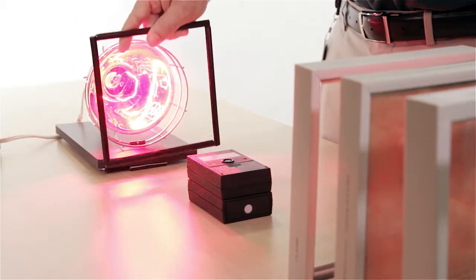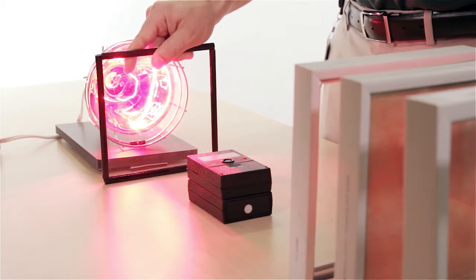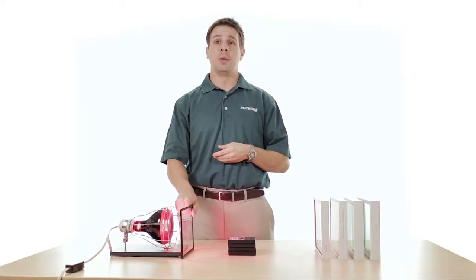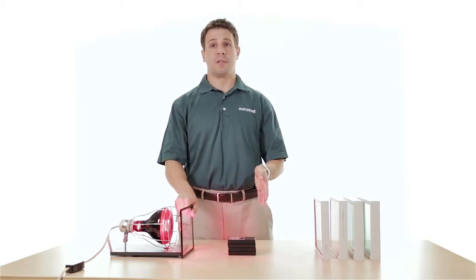In most homes today, we have what's called single pane glass in your windows. If I set this single pane glass in front of the BTU meter, the BTU meter reads 81%. So 81% of the heat from this lamp is actually entering your home, whereas 19% is being blocked out.